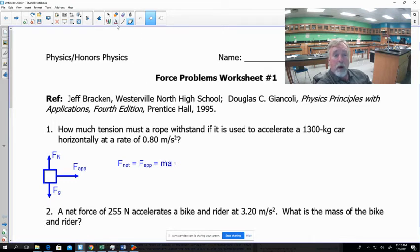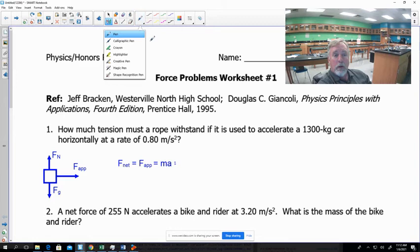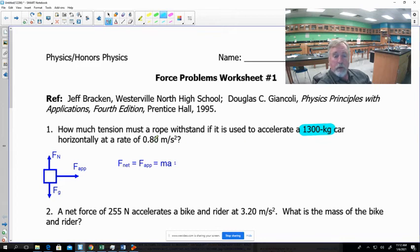So let's plug it in. What's our mass? Our problem tells us our mass right here. It's a 1300 kilogram car. It also tells the acceleration, it's 0.80 meters per second squared. So let's go ahead and plug those numbers in. 1300 kilograms, that's our mass, and 0.80 meters per second squared. We're going to multiply those together.